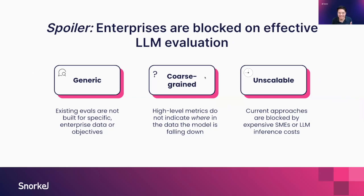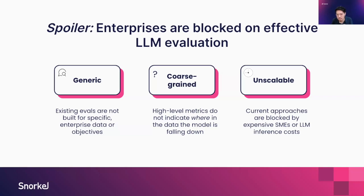The spoiler alert is that enterprises are really blocked on effective LLM evaluation for a number of reasons. One, current approaches are often pretty generic — they're not built for your specific enterprise data and objectives, and as a result aren't as effective. They're usually evaluating more global, generic objectives, which are quite helpful when building base foundation models, but can be less relevant when you're trying to ship your own models to production. Two, these metrics and benchmarks are often pretty coarse-grained — they don't actually indicate where in the data your model is falling down or what business-critical subsets you should pay attention to.